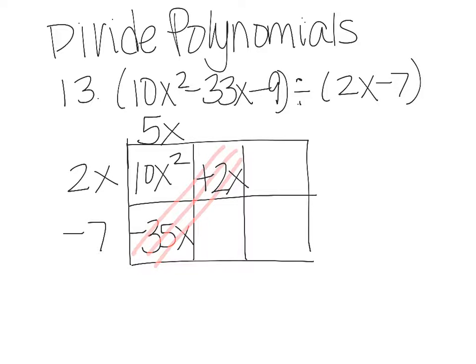Because negative 35x plus 2x has to add up to this negative 33x that I'm highlighting up there. Those things are like terms. They have to all add up together.